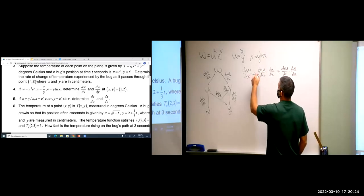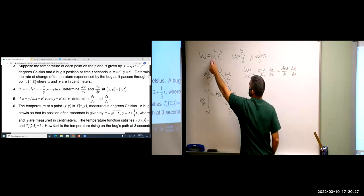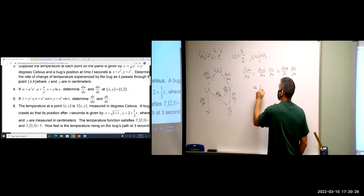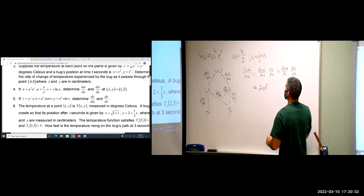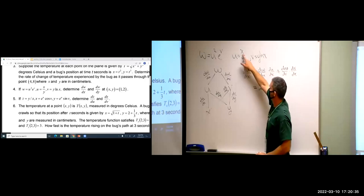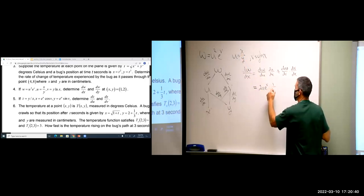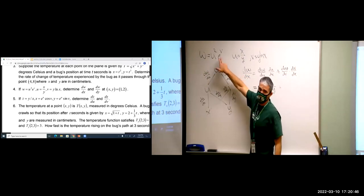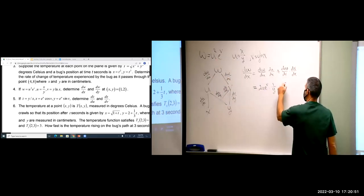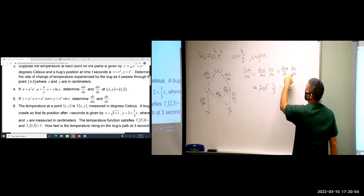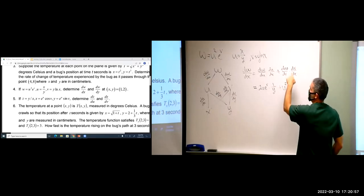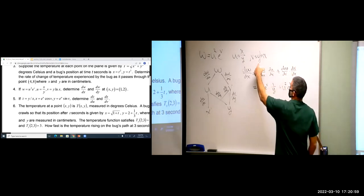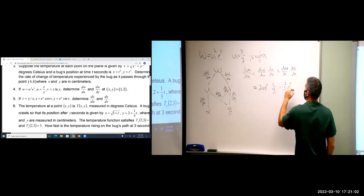So we go through the partials. dw/du is 2u times e to the v. du/dx: the derivative of x over y with respect to x is just 1/y. dw/dv: the derivative of e to the v is e to the v — u squared is just a constant — so that's u squared times e to the v. And dv/dx: y is a constant, and the derivative of ln(x) is 1/x, so dv/dx equals y over x.